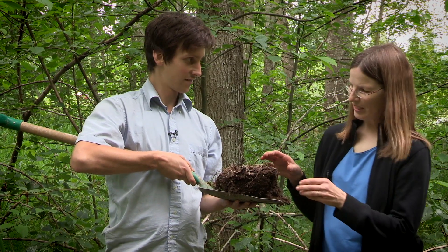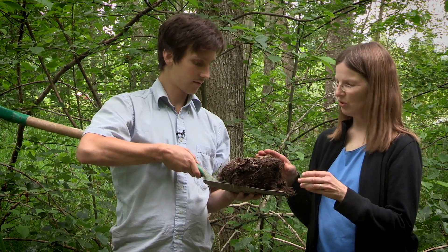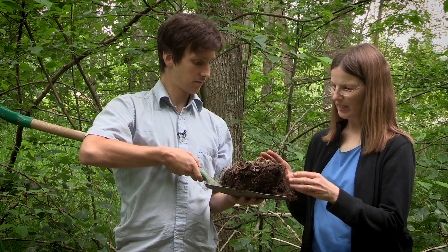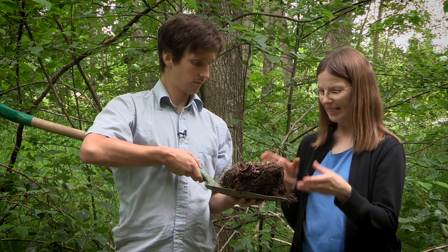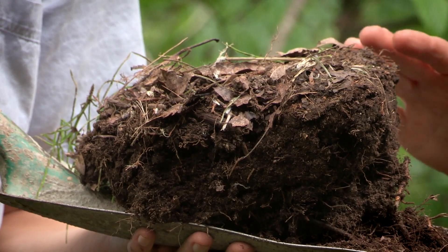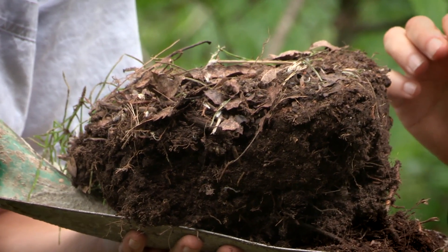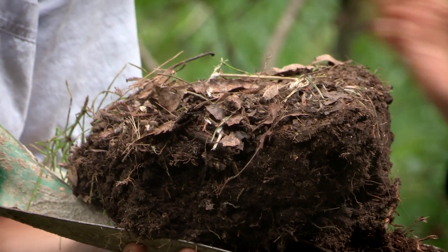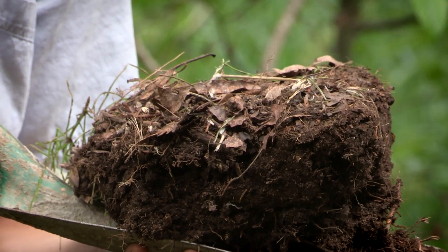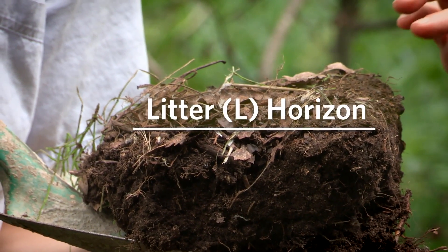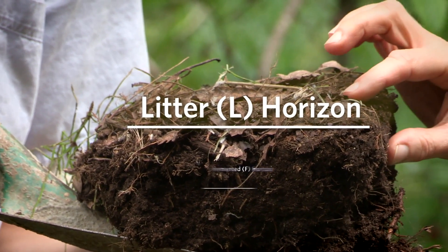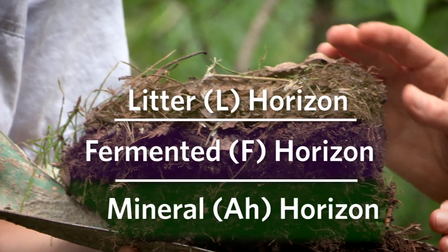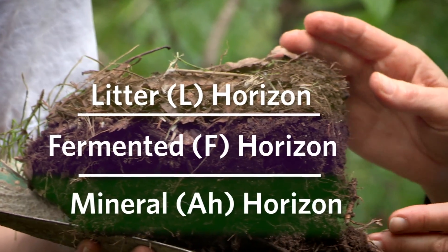Well with this sample we can do two main things. We can take this sample as it is, put it in a container and take it back to the lab for a complete description of the forest floor and what humus form we have here — because we've got L, we've got some F, and we have AH. That's one thing.